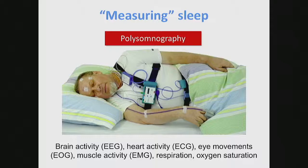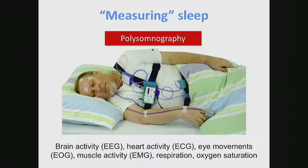We also look at heart activity with an ECG, and eye movement with two little electrodes, because that's important to determine the stage of sleep - whether we're in rapid eye movement sleep or not. Then we look at muscle activity, especially around the chin, which is important for REM sleep, or the legs for sleep-related disorders like periodic limb movement. We also look at factors around respiration - oxygen saturation, breathing expansion of both the chest and abdomen - really to look for disorders like sleep apnea.